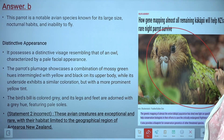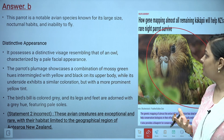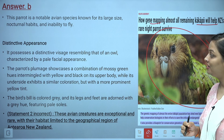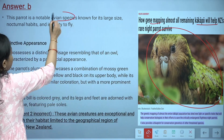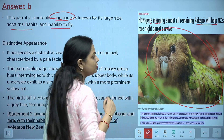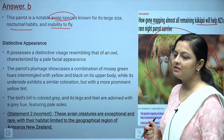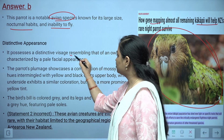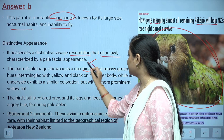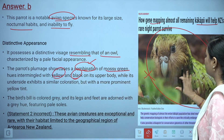The Kakapo is a combination of owl and parrot — it has owl-like features and the green coloring of a parrot. Gene mapping of almost all remaining Kakapo is being done to help New Zealand's rare night parrot survive. It is a very large avian species, with nocturnal habits and an inability to fly — it sleeps during the day and is active at night. It possesses a distinctive owl-like face with pale facial features and mossy green plumage intermixed with yellow and black on its upper body.